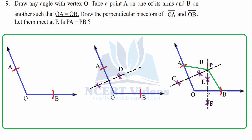Open the compass slightly greater than half of OB, cut arcs twice, and do the same from B. Join to get the perpendicular bisector of OB. Both perpendicular bisectors meet at a point P. Using the divider to compare PA and PB, you find that PA equals PB. That was the last question, number 9.